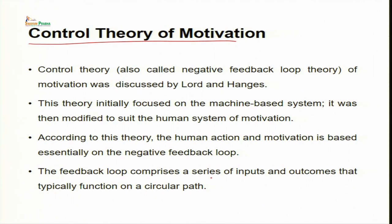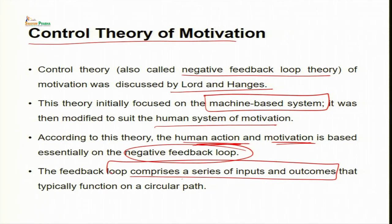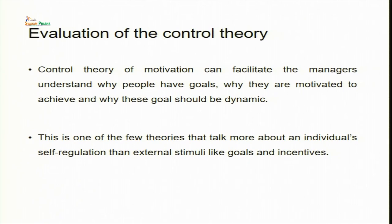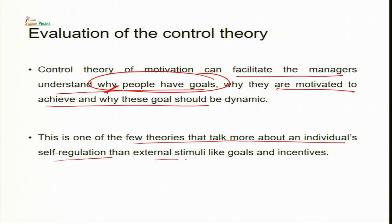The last theory of motivation is control theory, also called the negative feedback loop theory, discussed by Lord and Hanges. Originally focused on machine-based systems, it was modified to suit human motivation. According to this theory, human action and motivation is based on a negative feedback loop comprising series of inputs and outcomes. Goals are the ones that motivate the individual, and this is one of the few theories that talks about individual self-regulation and external stimuli like goals and incentives for motivation.